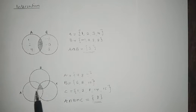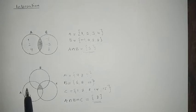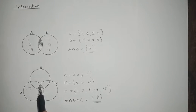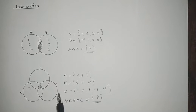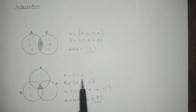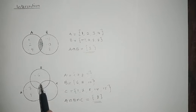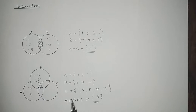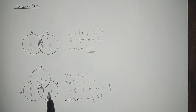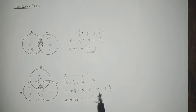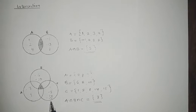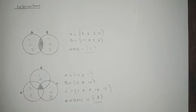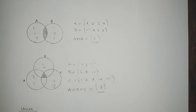Now let's place them in the three-circle Venn diagram. For A: 7 goes in A's region, 8 goes in the center (found everywhere), and 9 is in A's region. For B: 6 is in B's region; 8 is already in the center; 10 is in B's region. For C: 1, 2 go in C's region; 8 is already in the center; 14 and 15 go in C's region.